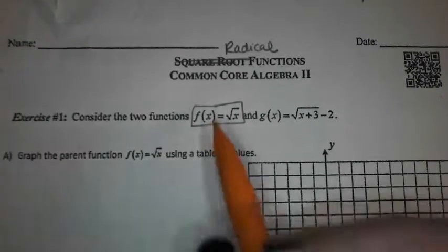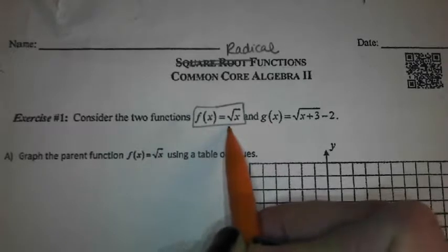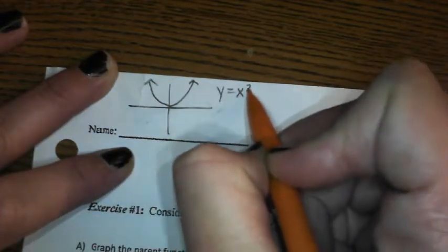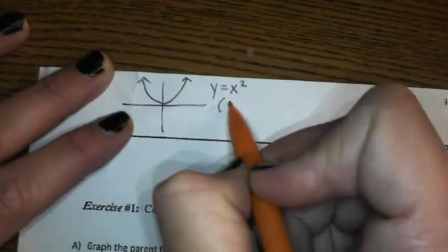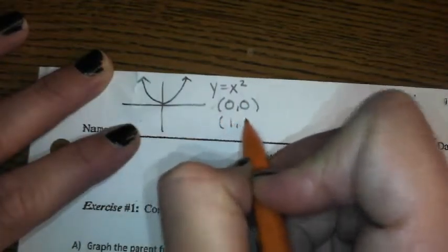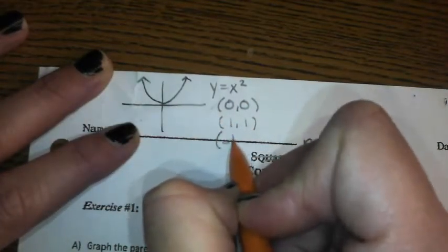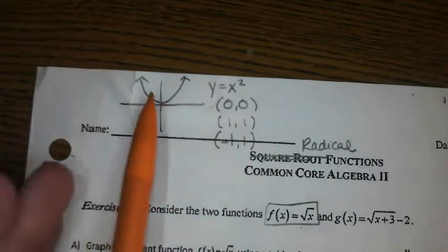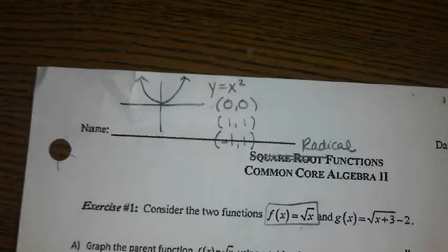So, radical functions. This is our parent graph. Every parent graph has key features. For example, on a parabola, the parent graph was just y equals x squared. And the key feature was the fact that we had 0,0 as a point, then 1,1 and negative 1,1. Those are kind of the three key points on the parent graph of a quadratic.